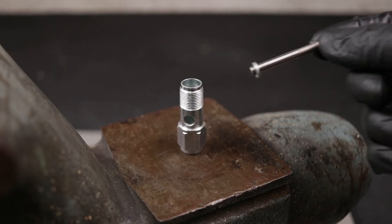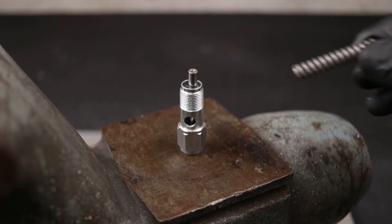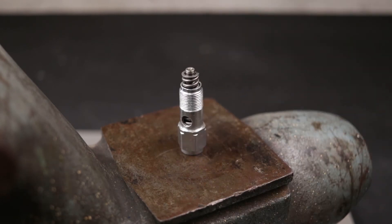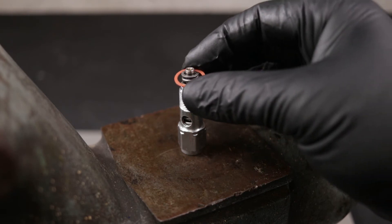Last part to assemble is the adapter. Place the main piston into the chamber, then slide the replacement spring over the piston. Lastly, slide one copper gasket over the threads of the adapter.